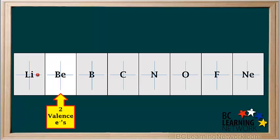Now we'll move to beryllium, which is in group 2 and has two valence electrons. Valence electrons are usually added to beryllium at right angles to each other. But some texts show beryllium's two valence electrons on a straight line, which is also acceptable for beryllium.